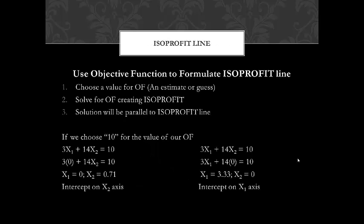We use the objective function to generate an isoprofit line. We know that any profit number we choose will generate a line parallel to our maximum profit line.